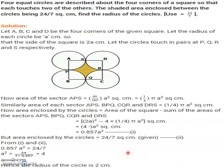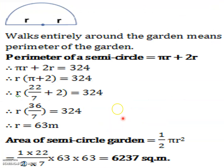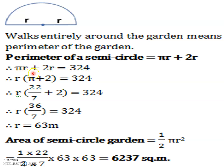Next example: in this diagram, it looks like a semicircle. We know that 2R equals the diameter of the circle. A person walks entirely around the garden — meaning the perimeter of the garden. The perimeter of a semicircle is πR + 2R. The perimeter is given as 324, so πR + 2R = 324. Taking R as common: R(π + 2) = 324.